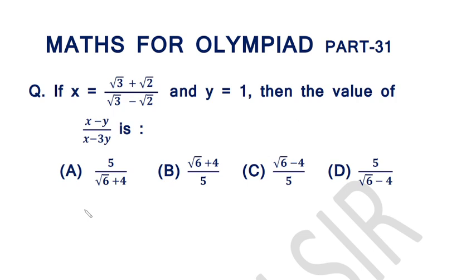Namaskar. This is the 31st video of the series Maths for Olympiad. Today's question is: if x is equal to square root of 3 plus square root of 2 over square root of 3 minus square root of 2, and y is equal to 1, then the value of x minus y over x minus 3y is: (A) 5 over square root of 6 plus 4, (B) square root of 6 plus 4 over 5, (C) square root of 6 minus 4 over 5, or (D) 5 over square root of 6 minus 4. Let us start.